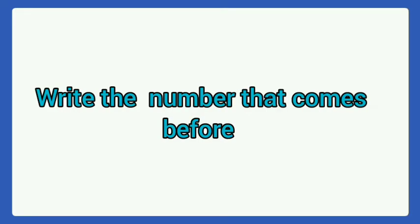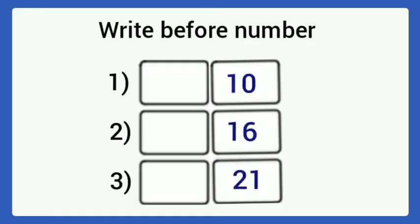Write the number that comes before. Here, we want to write the before number. First number is 10. Which number comes before 10? It is 9. Next number is 16. Before 16, it is 15.